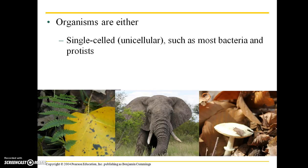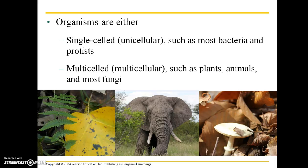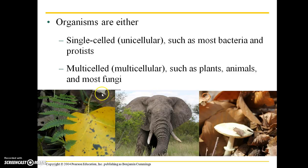All organisms are either single-celled — also known as unicellular, which is most bacteria and protists — or multicellular, such as plants, animals, and most fungi. So all of the visible organisms in these pictures are multicellular.